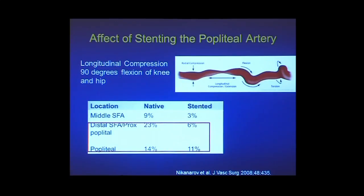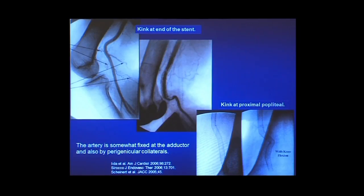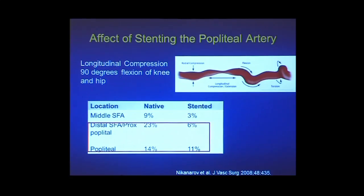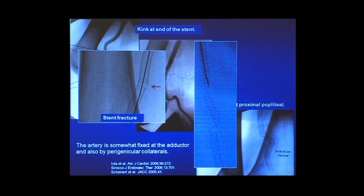Looking at native arteries versus stented arteries, you see dramatically different behavior in terms of longitudinal compression, which occurs with the hip and knee both flexed at 90 degrees. The native artery and the stented artery behave completely differently, as they do in the SFA, proximal popliteal, and the popliteal itself. What this manifests as is that putting too much stiffness in a place that should allow for curvature results in a kink, leading to stent fractures, which in some papers is associated with restenosis.